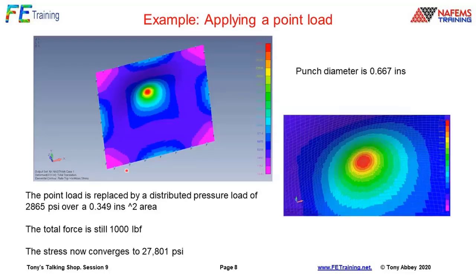Taking that idea: replacing the point load with a distributed pressure load over a punch footprint. With a punch diameter of 0.667 inches, there's a circular zone still applying very local pressure — but because it's a pressure with sufficient elements, it's not a singularity. The total force is still a thousand pounds, but the stress now converges to about 27,000 PSI. That's the key fix-up: spread the load out rather than accepting a point load.